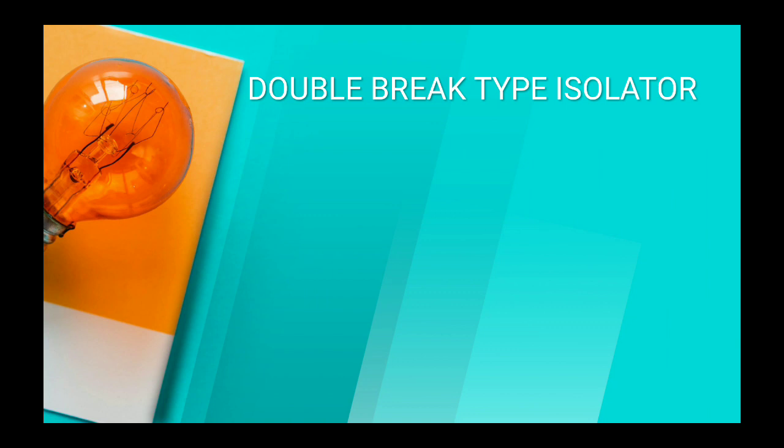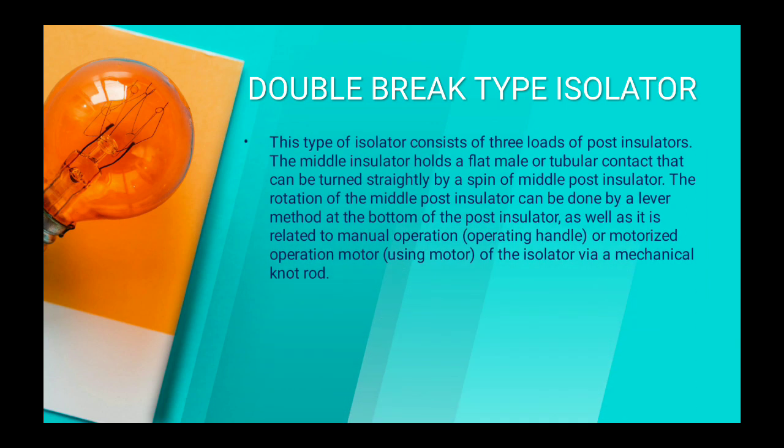Double brake type isolator. This type of isolator consists of three sets of post insulators. The middle insulator holds a flat male or tubular contact that can be turned by rotation of the middle post insulator. The rotation of the middle post insulator is done by a lever method at the bottom, and it is related to manual operation or motorized operation of the isolator via a mechanical rod.